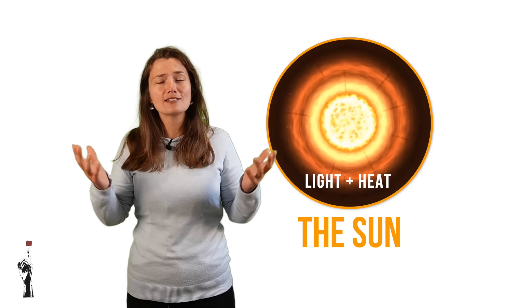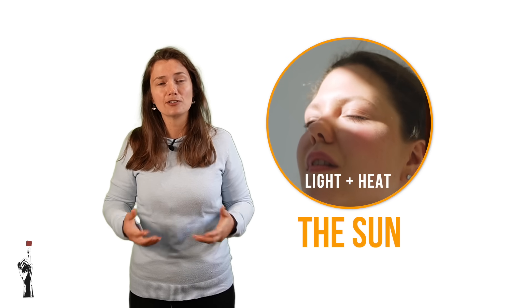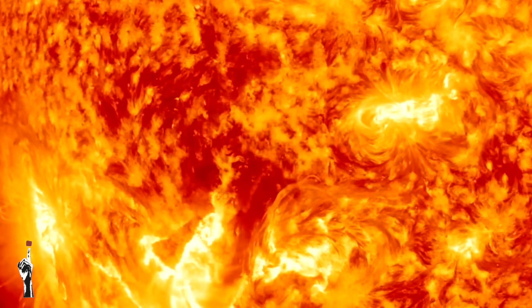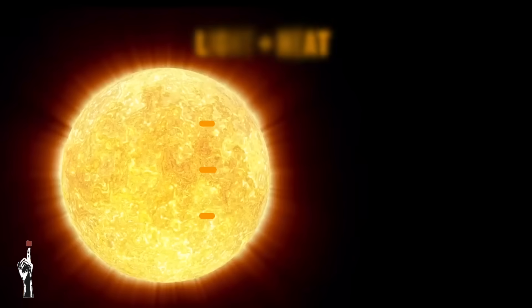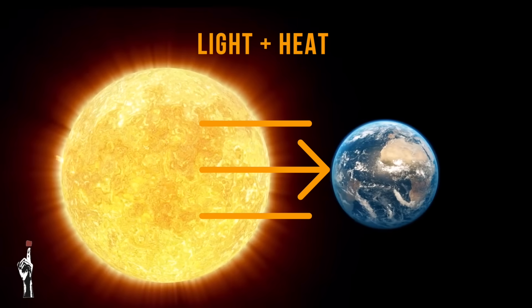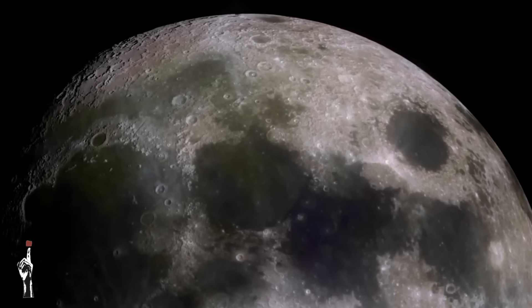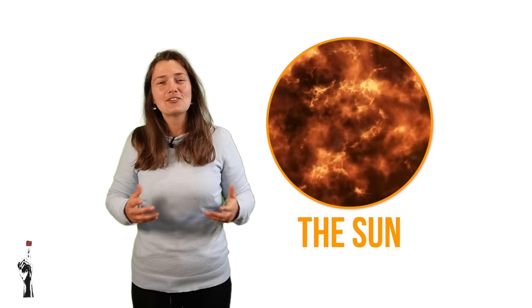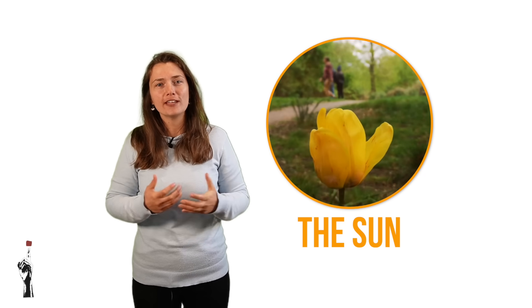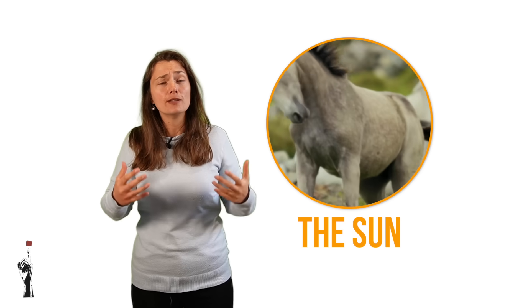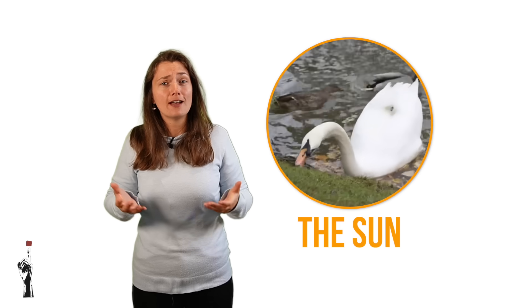That light and heat is what we feel here on planet Earth — it's being released by the Sun. The Sun's energy, released as light and heat, is the reason we have life on planet Earth. Without it, this planet would be a frozen, lifeless rock. The Sun is the primary source of energy for living things on Earth; without it there would be no life, because there would be no energy.